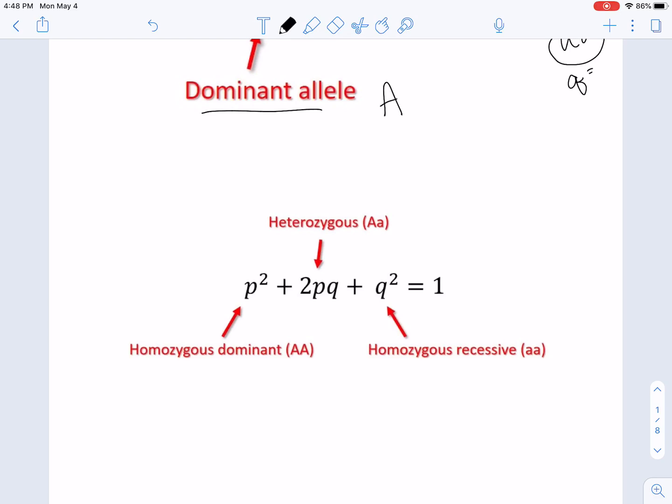The next equation looks like this. So P squared plus 2PQ plus Q squared equals one. Again, one as in 100%. So we have the homozygous dominant individuals. So big A, big A is represented as P squared. The heterozygous individuals, big A, little a, remember hetero is different, is 2PQ. And then for our homozygous recessive, little a, little a, you have Q squared.